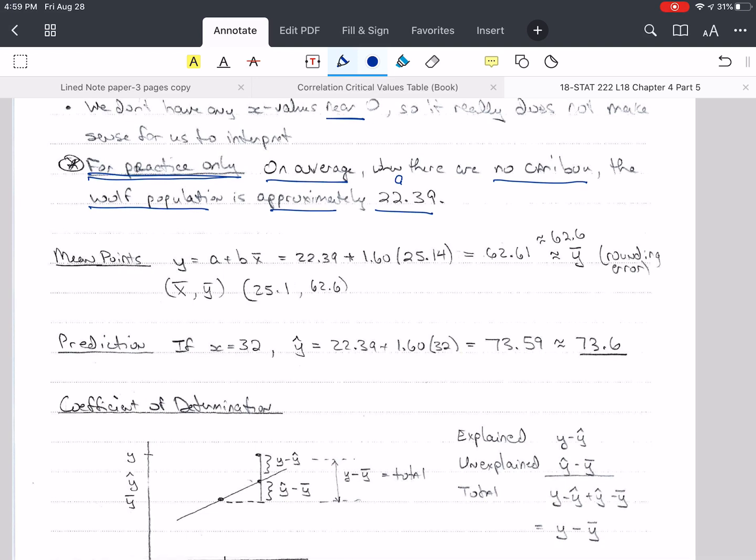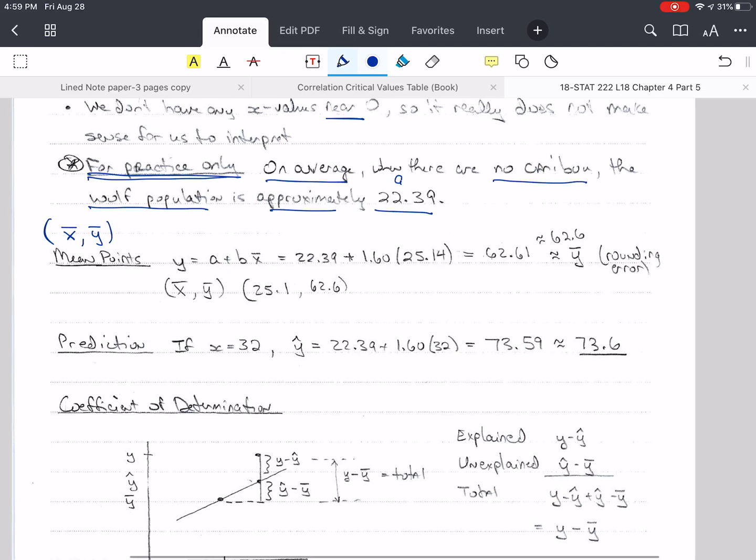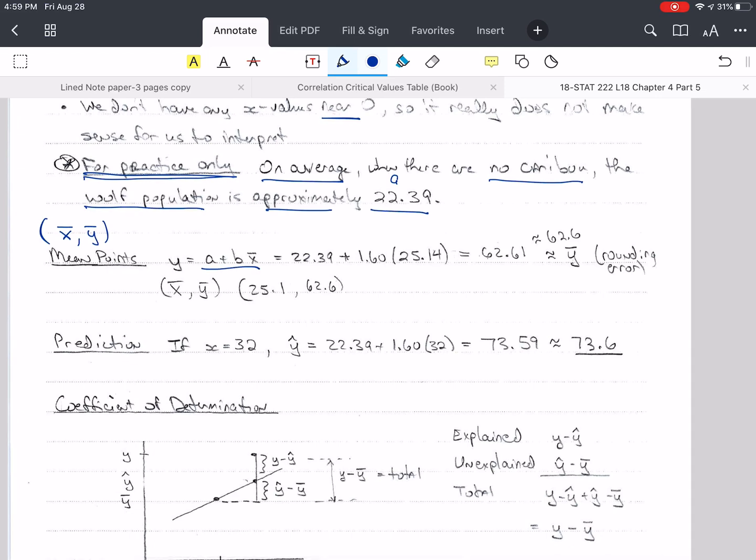The mean points, and those are not points that are mean to you, they're the averages, x bar and y bar. If I plug in x bar here, I get a value that's very close to y bar. The difference is in rounding error. So the points x bar, y bar are on the line.